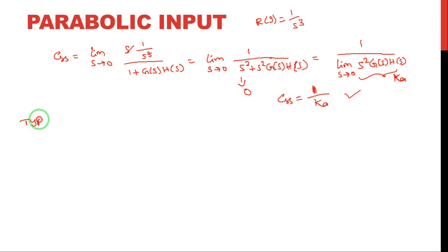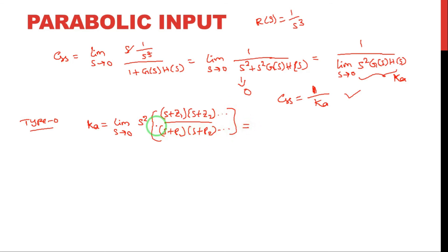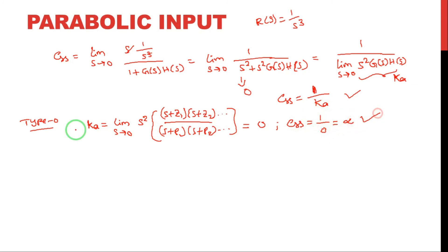For Type 0 system with parabolic input, Ka = limit S→0 of S² × G(S)H(S). Since S power 0 means no free S terms, S² × the transfer function → 0. So Ka = 0 and steady state error = 1/0 = infinity. For Type 1 system, similarly Ka = 0 and steady state error = infinity.